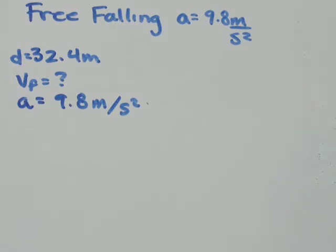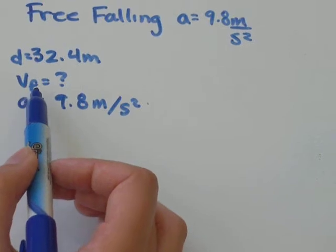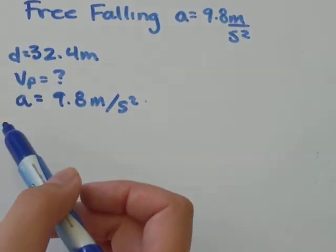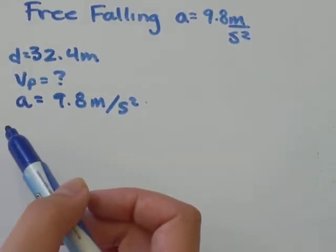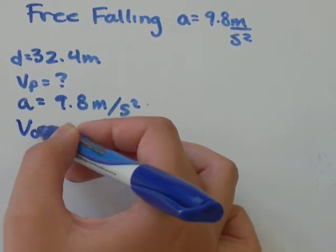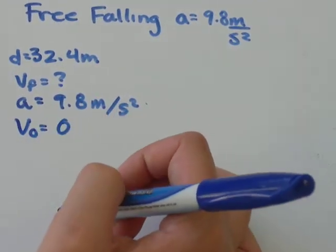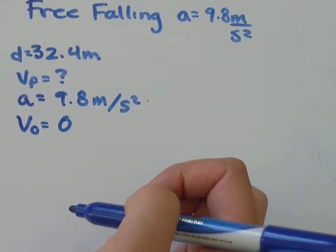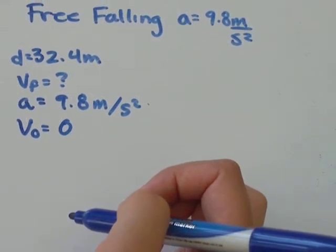We're asked what is the velocity when the stone hits the Earth. So that would be the final velocity. You can assume we're holding it in our hand up there and we let go. So the original velocity would be zero. We don't have any mention of time,